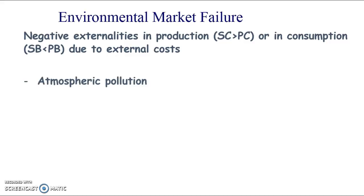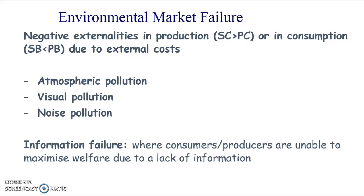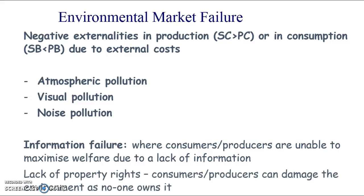We get environmental market failures in production — thinking of atmospheric pollution, visual pollution, and noise pollution — but also in consumption, such as visual pollution, noise, or people consuming lots of alcohol and causing nuisance in town centres. We also get information failure where consumers or producers are unable to maximise welfare because of a lack of information, leading to over- or under-consumption, and a failure to account for private costs, external costs, private benefits, and external benefits. This is why we get merit goods, demerit goods, positive externalities, and negative externalities.